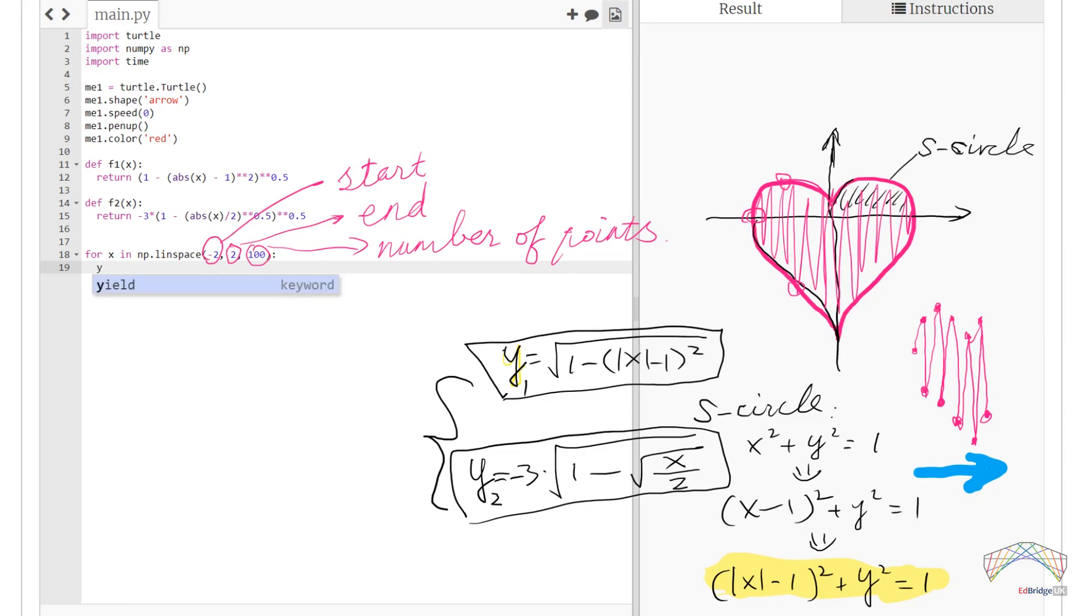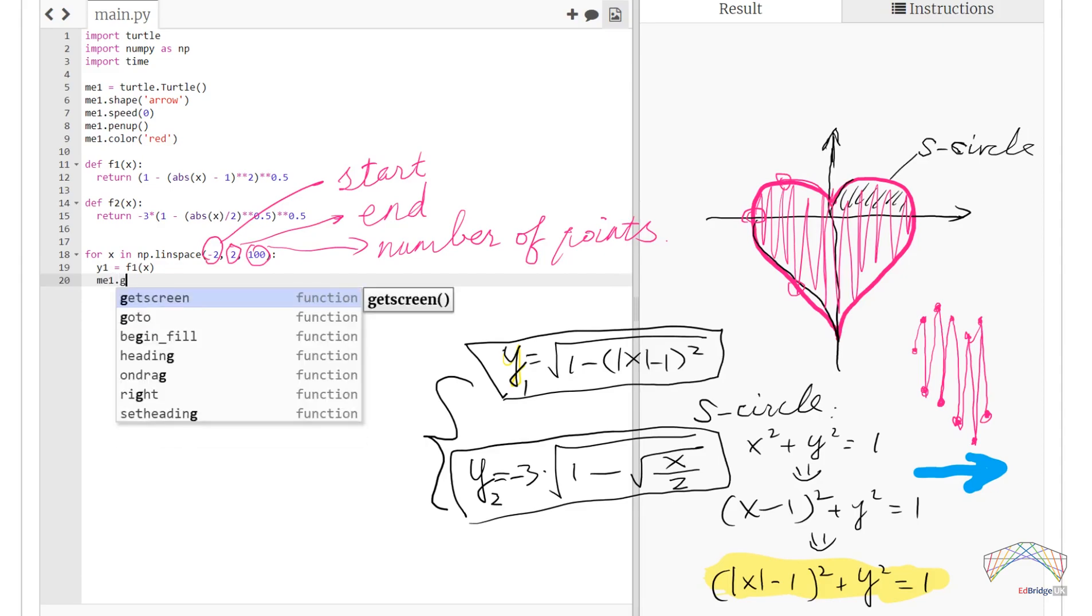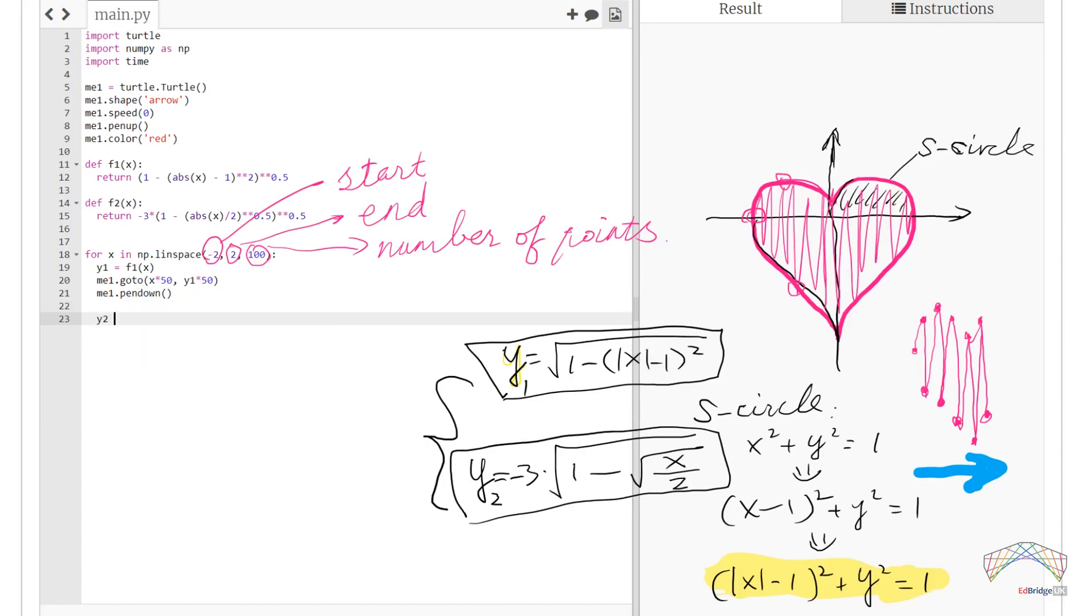Inside the loop, we need to get our beloved y points. First, y1 is equal to f1 of x and then our me1 turtle goes to x and y1 accordingly. And we put our pen down ready for drawing. Please note that we have made the x and y values 50 times bigger respectively, otherwise, the heart will be too small. This is called scaling and it is a very useful technique when your project requires work into different referencing frames. Now, we do the same for y2 and make me1 go to y2. Similarly, the y2 for turtle me1 is also 50 times bigger.